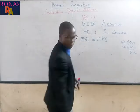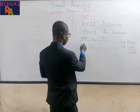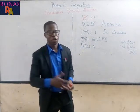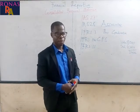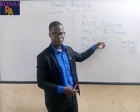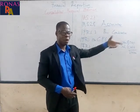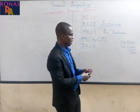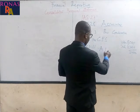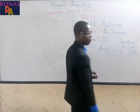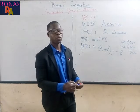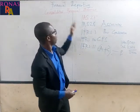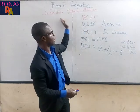We also have IFRS 11 — joint arrangements. This is where two companies come together to acquire another company. So we are looking at one company acquiring or having control over another company. But when we come to IFRS 11, we look at joint arrangements where two companies — say company A plus company C — come together to acquire company B. What are you supposed to look for, and what are you supposed to account for in your books? At the end of this lesson, you are supposed to understand what goes into the preparation of consolidated financial statements.